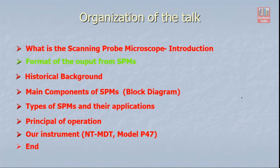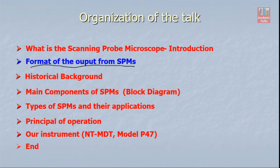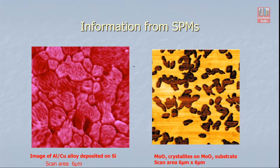The next point is what kind of output we get — the format of the output from SPMs. The output we get from SPMs is a 2D image. You can see here this image is obtained from an aluminium copper alloy. This alloy is deposited on silicon material, and that thin film is scanned with the help of SPM. The scan area is about 6 micrometers.